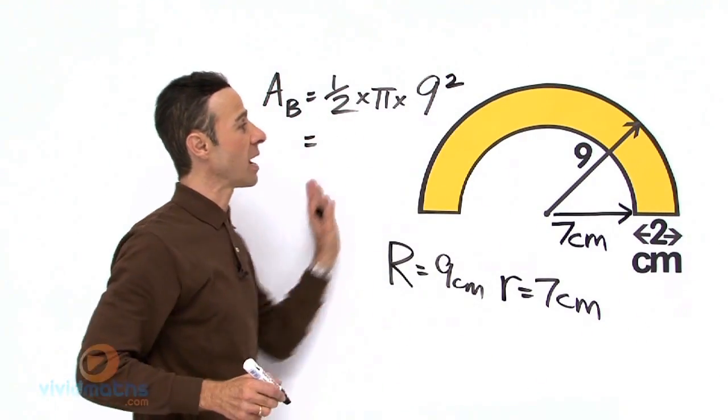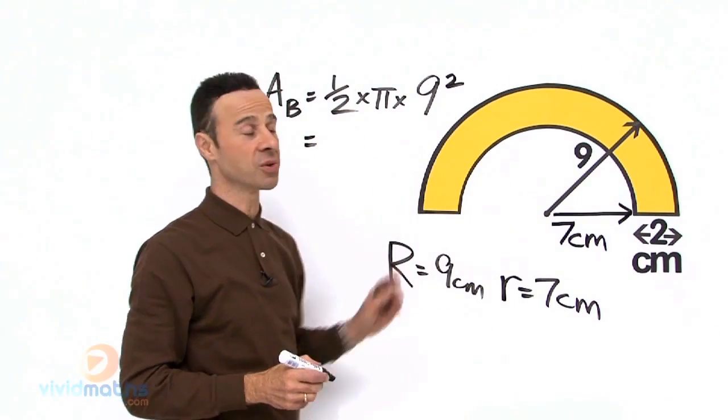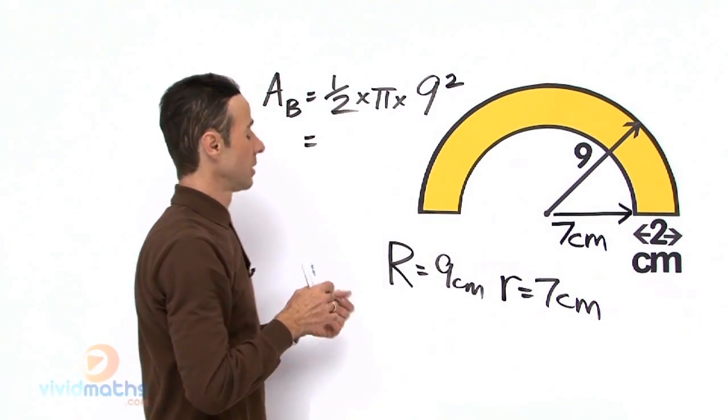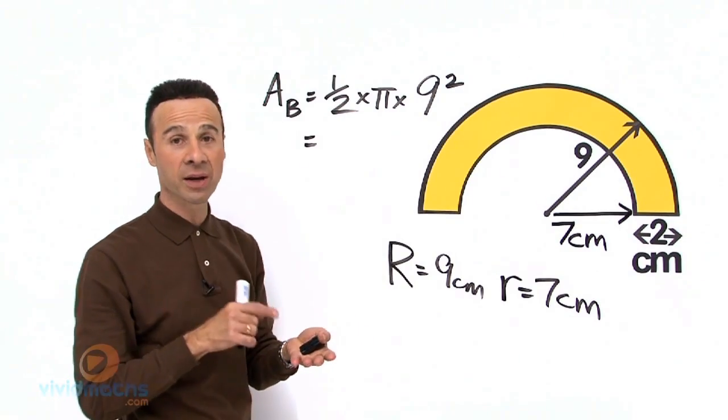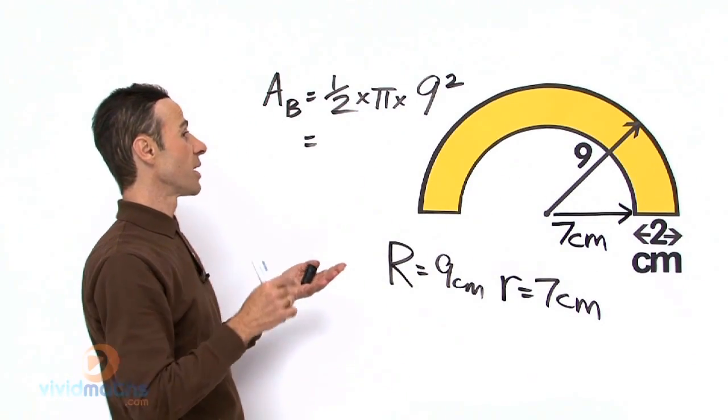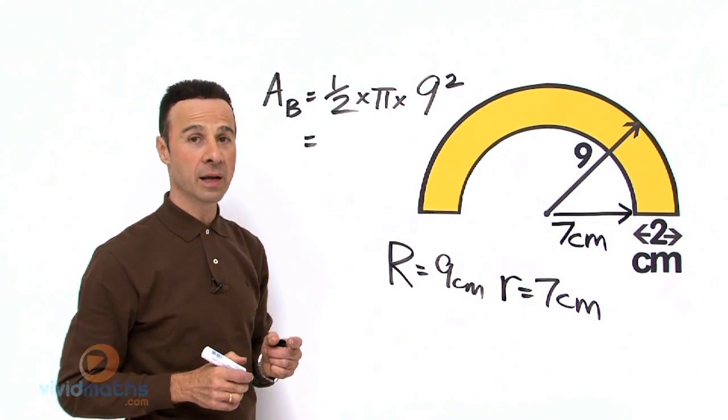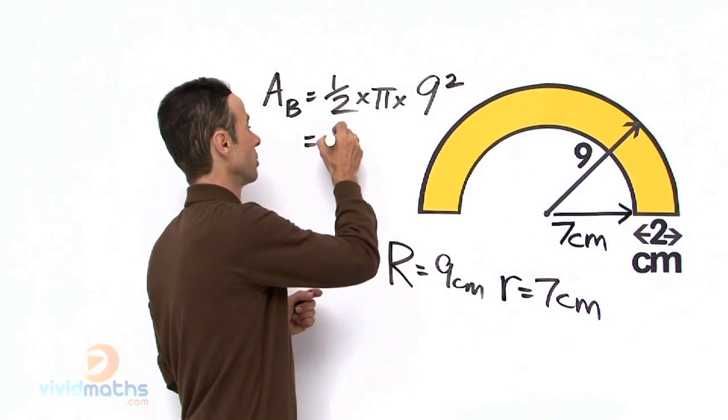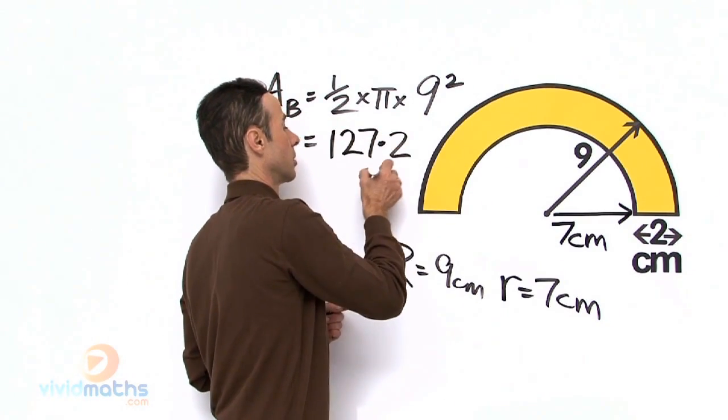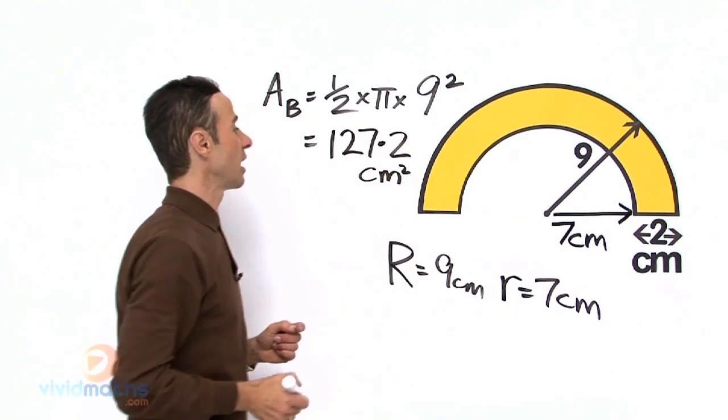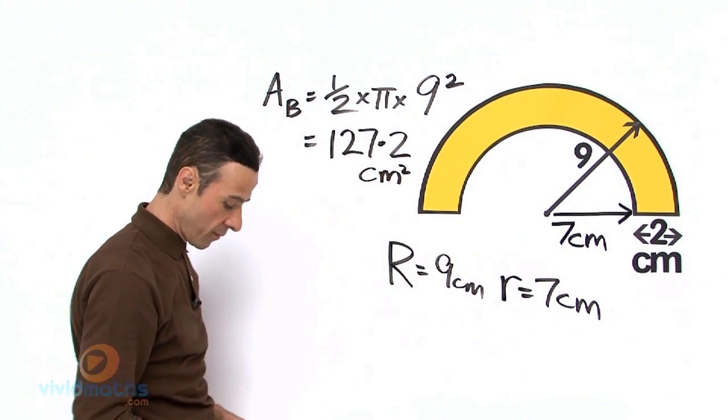So let us work that out for the large semicircle out here. 1 half times pi times 9 squared, or pi times 81, that is going to give us a grand total of 127.2 cm squared. Okay that is the large area of the circle.